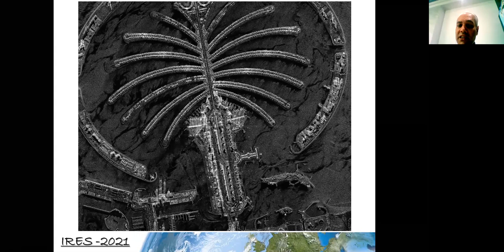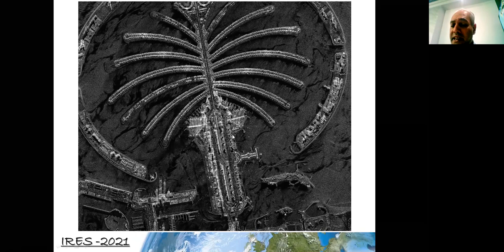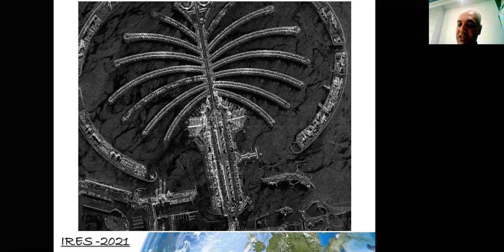The SAR is side-looking and nadir-looking, transmitting its own signals and receiving the echo. This is a radar image of Jumeirah in the United Arab Emirates — shown in grayscale. Black means very low backscatter return from that area, and white means very strong backscatter return. I will discuss later how we can use this information for geological and different applications.